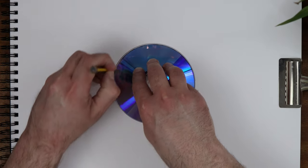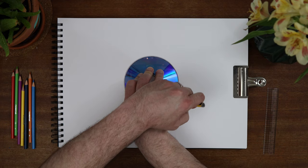Draw around your CD or DVD then use your ruler to mark 1cm points all the way around.